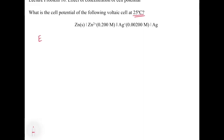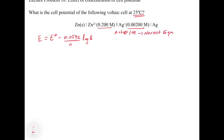Lecture problem 10 uses the Nernst equation. It says: what is the cell potential for the following voltaic cell at 25°C? Since we're at 25°C, we write the Nernst equation as E = E° − (0.0592 / n) × log(Q). We have to identify whether we can use the standard reduction potentials directly or not. The concentrations are not at 1 molar, so we definitely need to use the Nernst equation. If those concentrations were 1 molar, we could just use E = E_cathode° − E_anode°, but because they're not at 1 molar, we must use the Nernst equation.